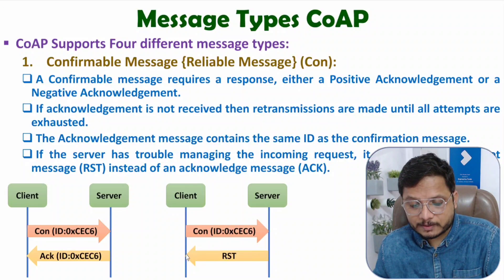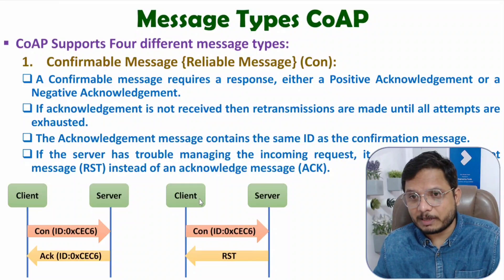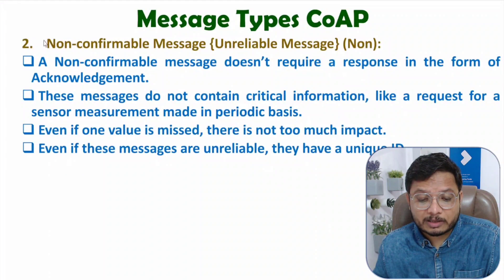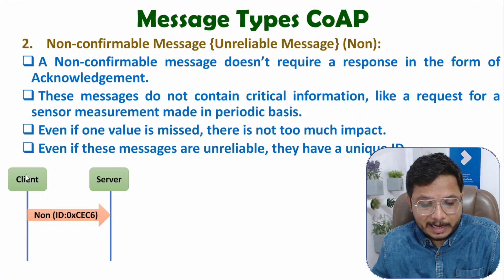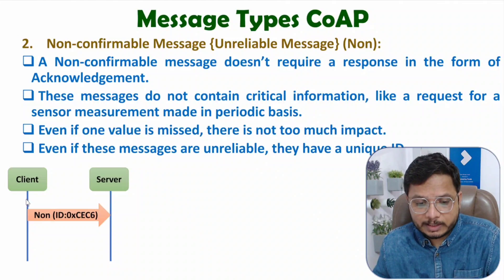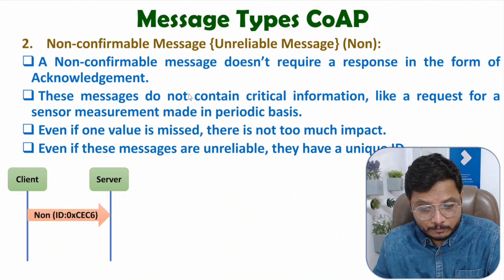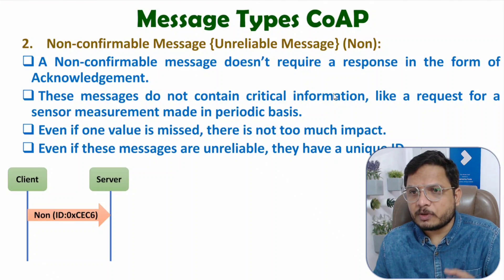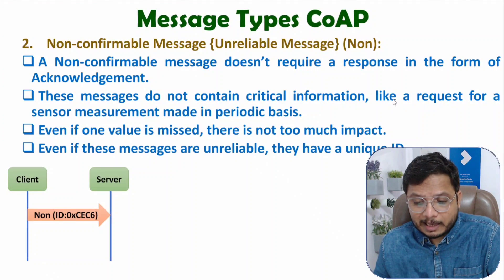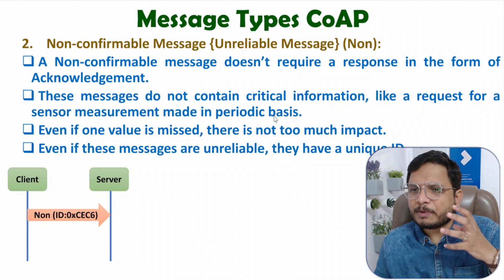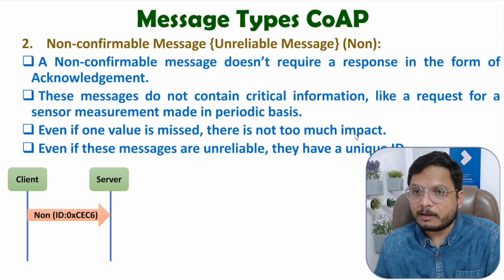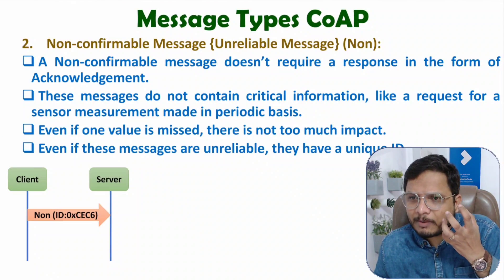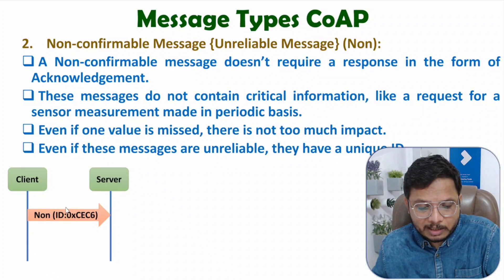Confirmation is taken by response, which may be a positive acknowledgement or a negative acknowledgement. The next message type is the Non-confirmable message, which is unreliable. In a non-confirmable message, we don't seek a response back. The client forwards a non-confirmable message with an ID, but the server does not respond — there is no confirmation. It is also referred to as NON in short. These messages do not contain critical information. For example, a request for sensor measurement made on a periodic basis — whenever you have periodic data, you don't confirm whether it was received. Even if one value is missed, there is not much impact, so if the message is lost, the application should not be affected. In that situation, non-confirmable message forwarding is used.